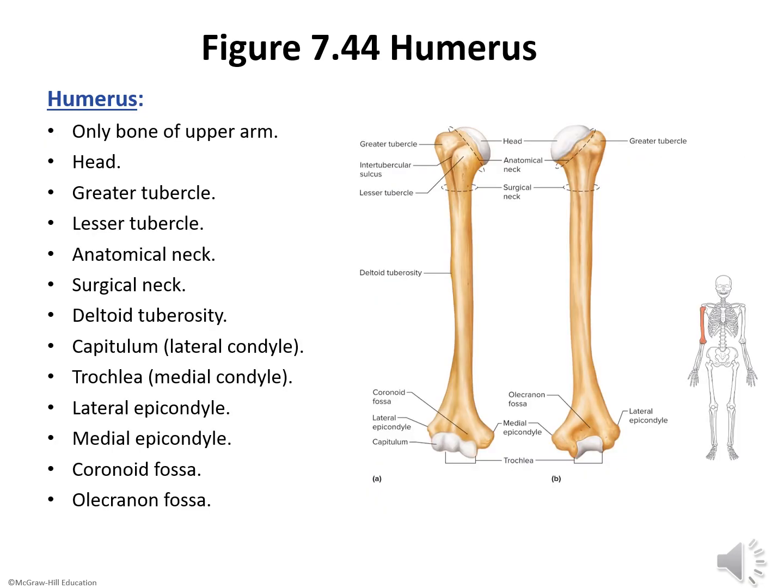The humerus is a long bone that extends from the scapula to the elbow. At its upper end is a smooth, rounded head that fits into the glenoid cavity of the scapula. Just below the head are two processes: a greater tubercle on the lateral side and a lesser tubercle on the anterior side. These tubercles provide attachments for muscles that move the upper limb at the shoulder. Between them is a narrow furrow, the intertubercular sulcus, through which a tendon passes — the biceps tendon — which goes to the shoulder.